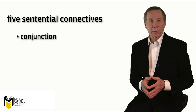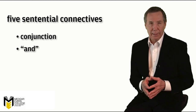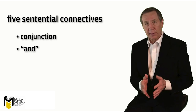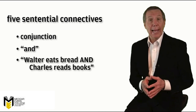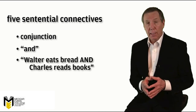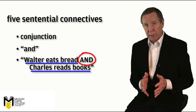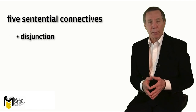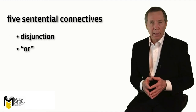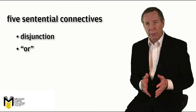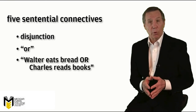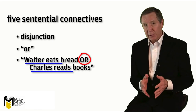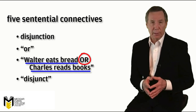Second, conjunction, most often expressed in English by the word 'and.' For example, we could conjoin two sentences: 'Walter eats bread and Charles reads books.' Note that each sentence when conjoined is known as a conjunct. Third, disjunction, expressed in English by the word 'or.' For example: 'Walter eats bread or Charles reads books.' Note that each sentence when disjoined is known as a disjunct.